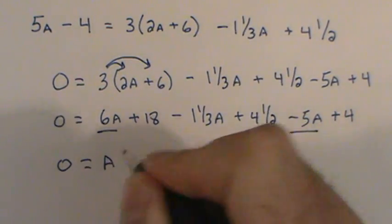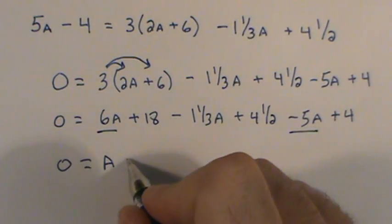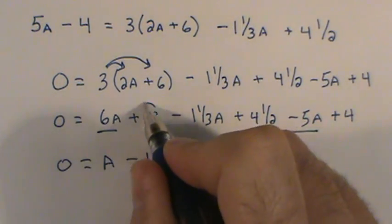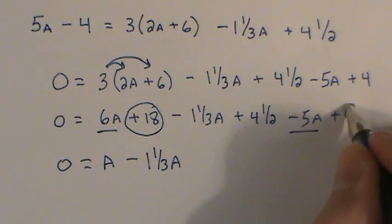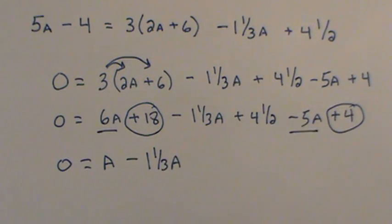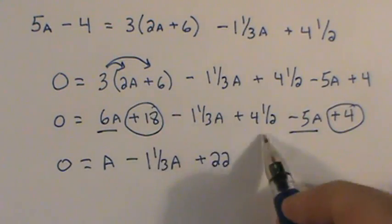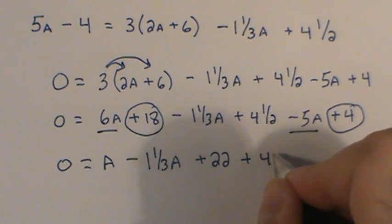Zero equals a. And I'll go ahead and group this over. Minus 1⅓a. And then I've got these constant values of 18 and 4. 18 and 4, of course, is 22. So I can go plus 22. And then I have that mixed number there, plus 4½.